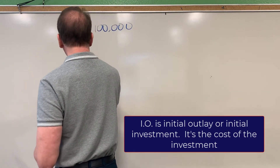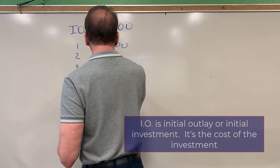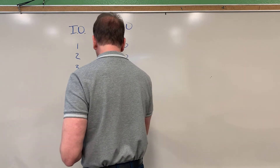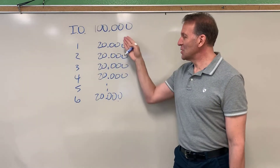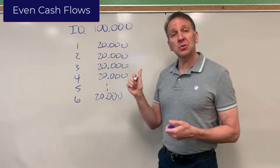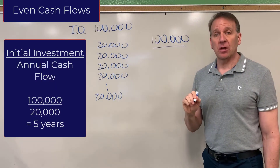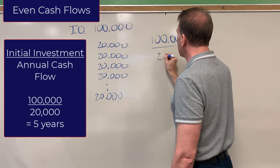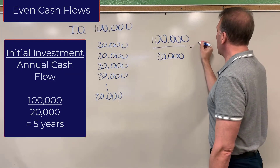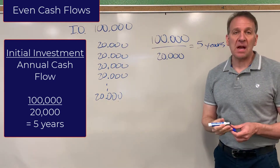Our cash flows are $20,000 each year for years one through six. When you have an even cash flow — meaning the same dollar amount each year — you take your initial investment of $100,000 and divide it by that even cash flow of $20,000 per year. This tells us that in five years we will pay back our original investment. The payback period is five years.